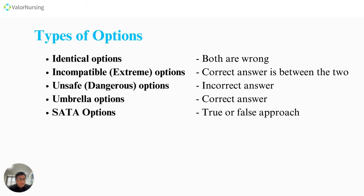SATA — select all that apply — is just actually a true or false type of question. You need to remember that SATA questions follow a true or false approach. So in summary, the types of options are: identical options, incompatible or extreme options, unsafe or dangerous options, umbrella options, and SATA options.